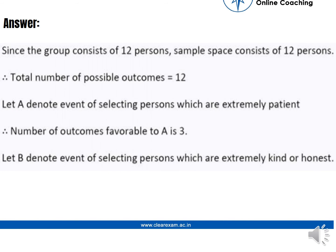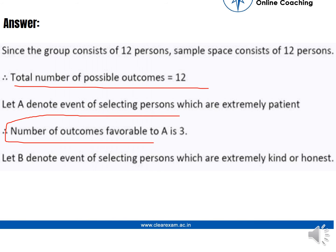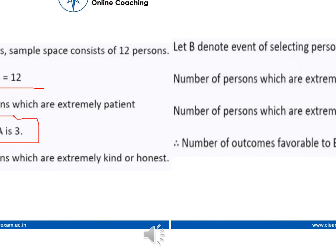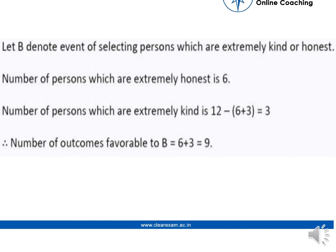The group consists of a total of 12 people. Let A denote the event of selecting a person who is extremely patient — there are 3 such persons, so favorable outcomes become 3. Let B denote the event of selecting a person who is extremely honest or kind. There are 6 honest persons and 3 kind persons, so the number of outcomes favorable to B is 6 plus 3, which becomes 9.